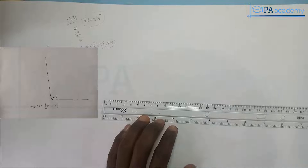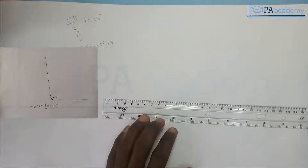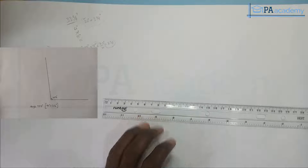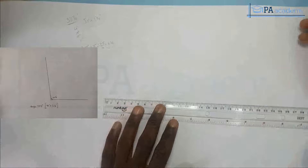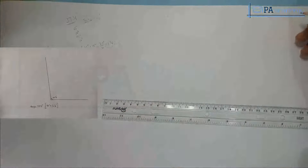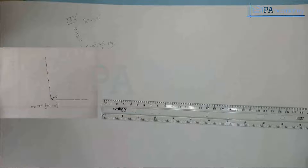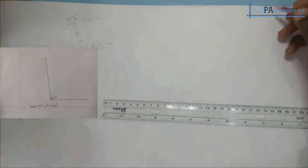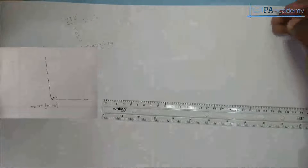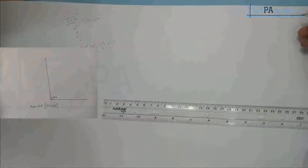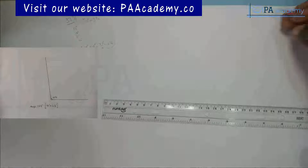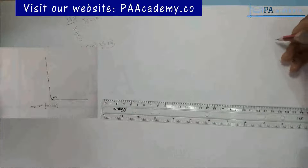I'm showing you how to construct angle 97 and a half degrees. In angle 97 and a half degrees, one of the first things you need to know is how do I achieve that angle? So what are the angles I'm going to be adding together to get 97 and a half? That's the first thing you need to decide.